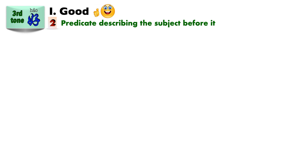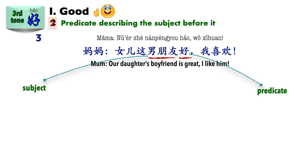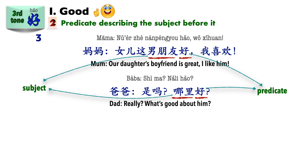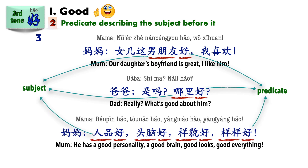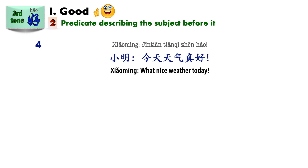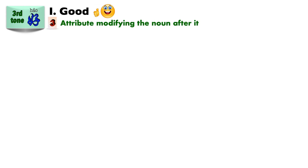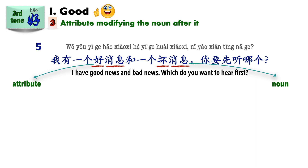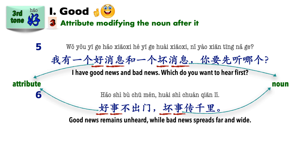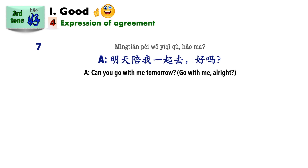好 can act as a predicate to describe the subject before it. For example: 女儿这男朋友好，我喜欢 — 'Your daughter's boyfriend is good, I like him.' And: 今天天气真好 — 'Today's weather is really nice.' It can also be an attribute to modify the noun after it: 我有一个好消息和一个坏消息 — 'I have one good news and one bad news.' 好事不出门，坏事传千里. It also expresses agreement: 明天陪我一起去，好吗? — 好啊! And simply: 我们明天去吧 — 好.